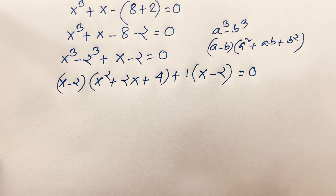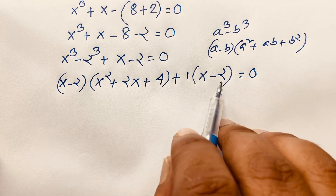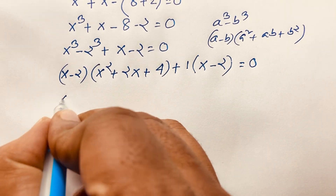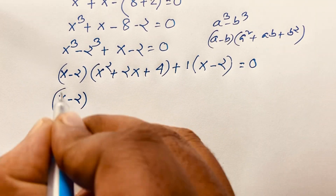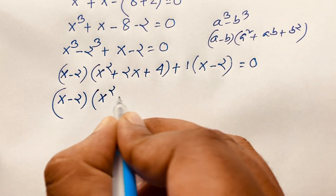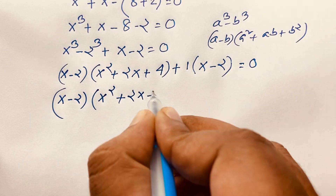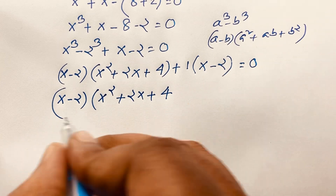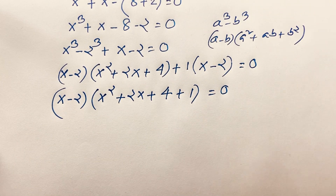Here, x minus 2 is common. Factoring it out gives (x minus 2) times (x squared plus 2x plus 4 plus 1), which equals (x minus 2)(x squared plus 2x plus 5) is equal to 0.